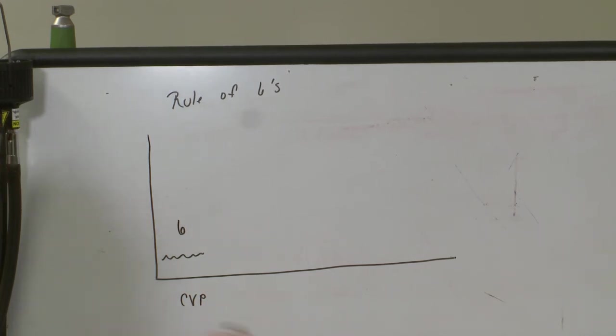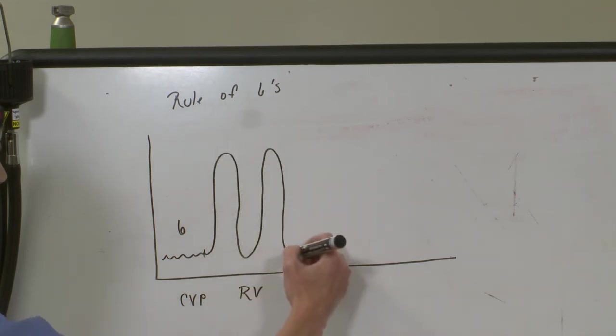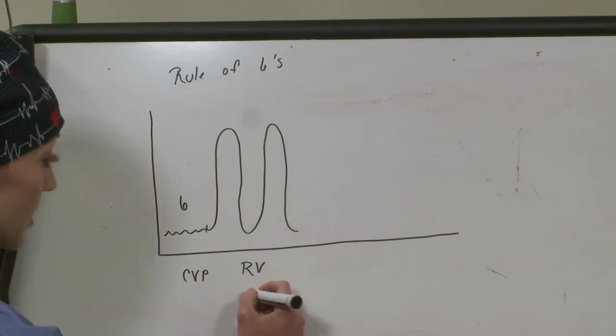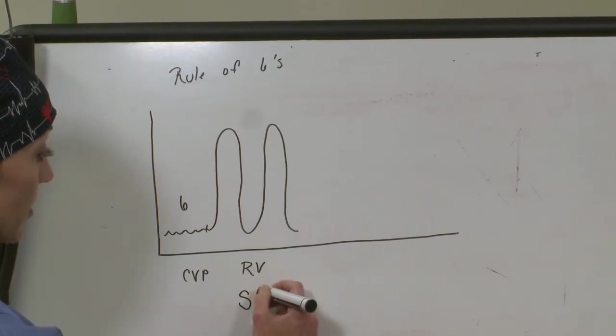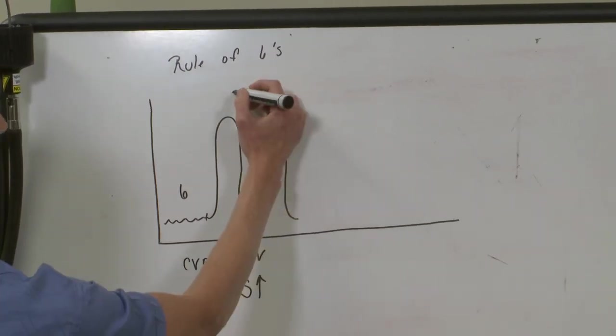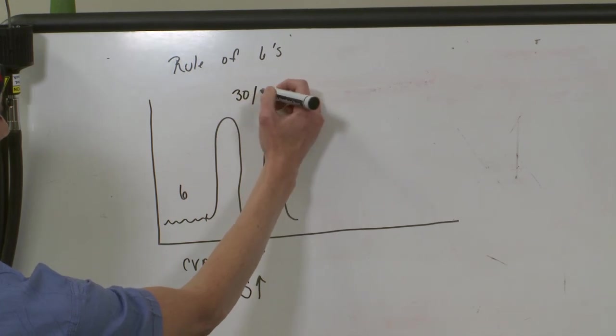Next, you're going to cross, go into the right atrium, cross the tricuspid valve, and then you're going to be in the RV. When you're in the RV, you get this systolic step up. Once you cross into the RV, you're going to see a systolic jump. So that's what I want you to remember about the RV. So once you cross in, you're going to get a systolic jump, and then your pressure is going to jump up to about 30 over 6.